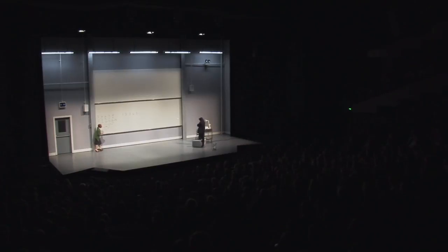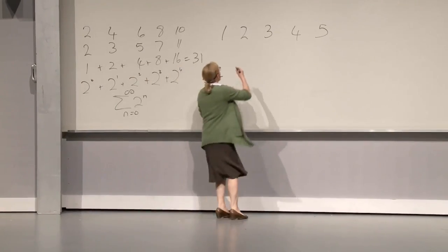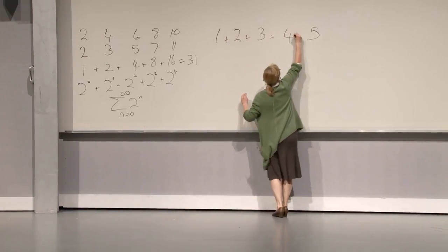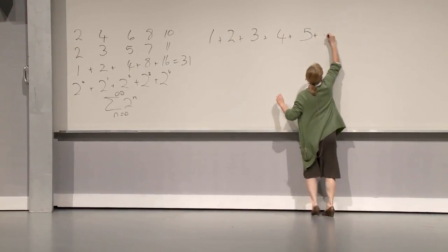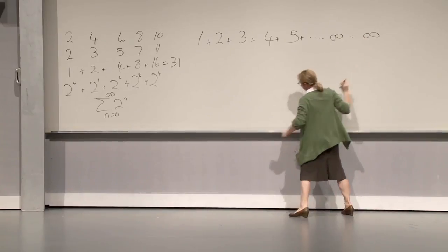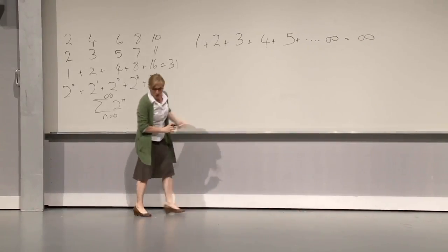Now, I want to show you another divergent series, perhaps the simplest of all: 1 plus 2, plus 3, plus 4, plus 5, and so on to infinity, equals infinity. But this is all very logical. But now, I'm going to do something very strange — I'm going to disrupt it.